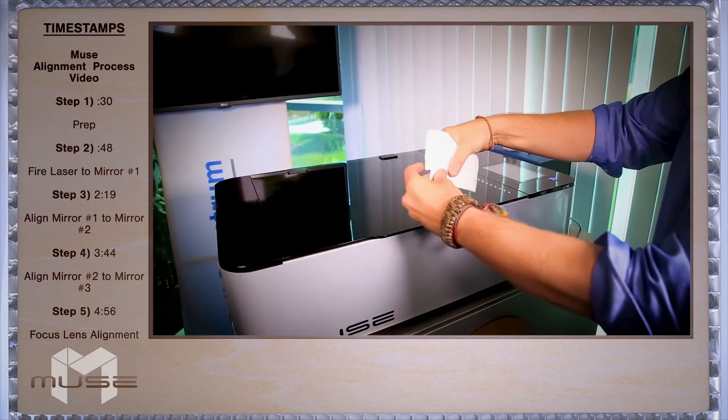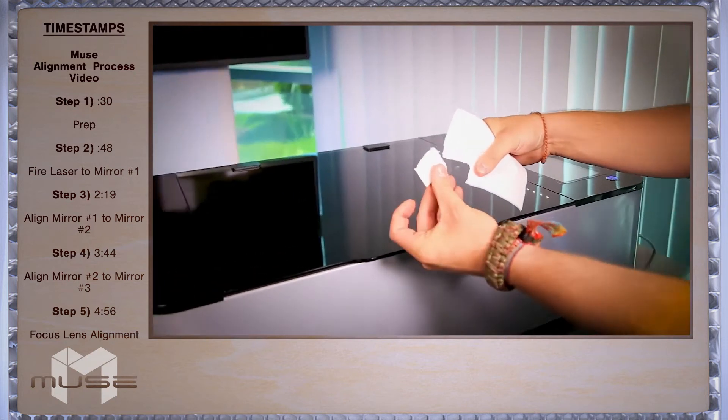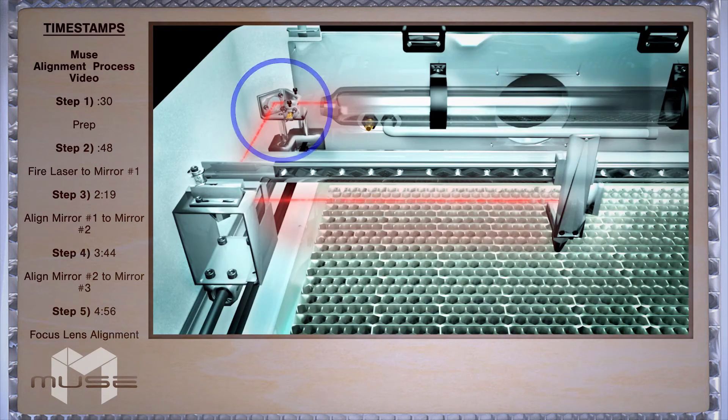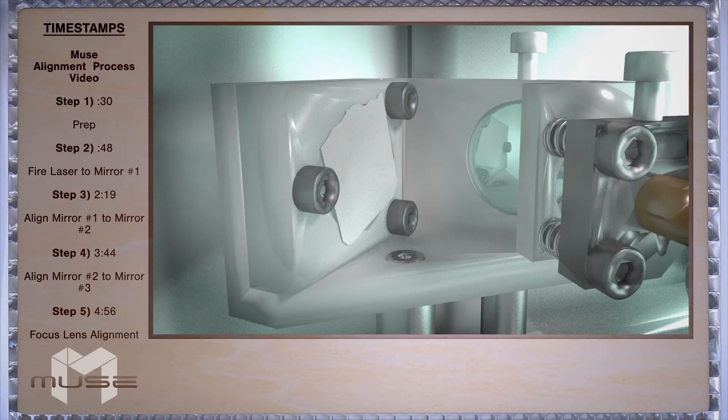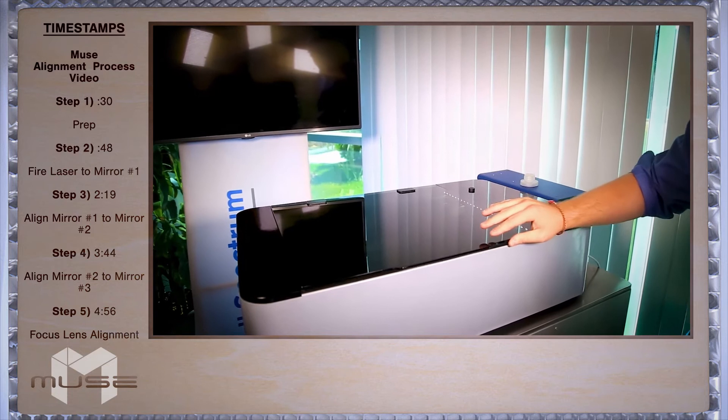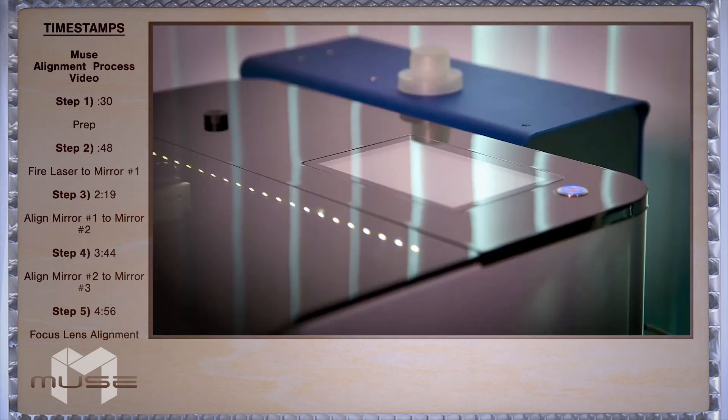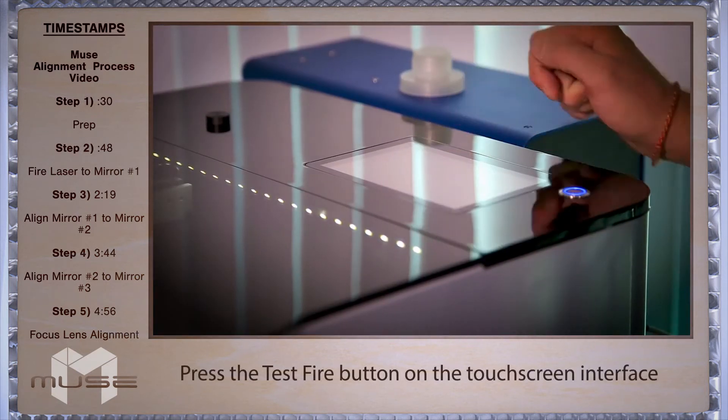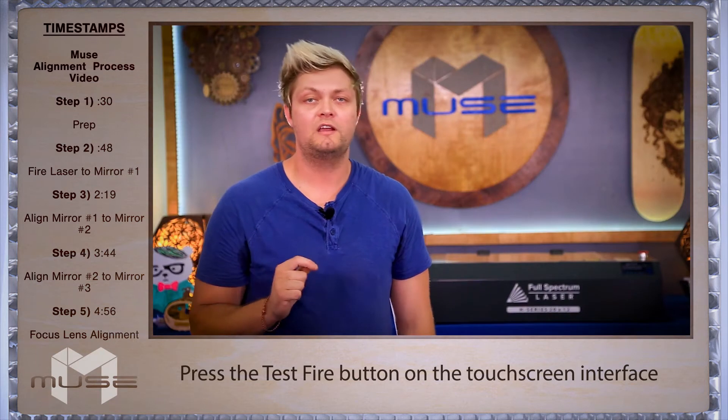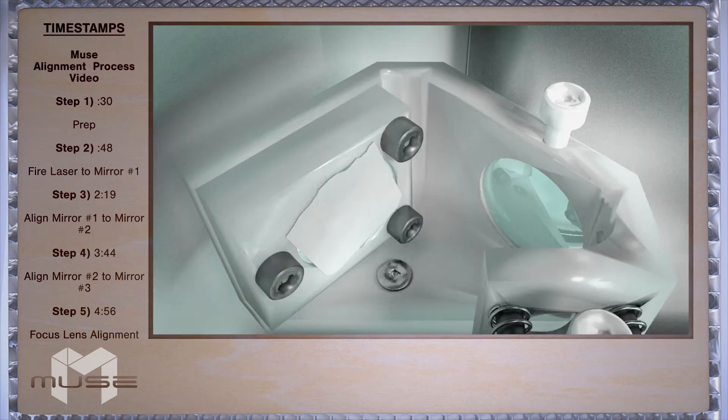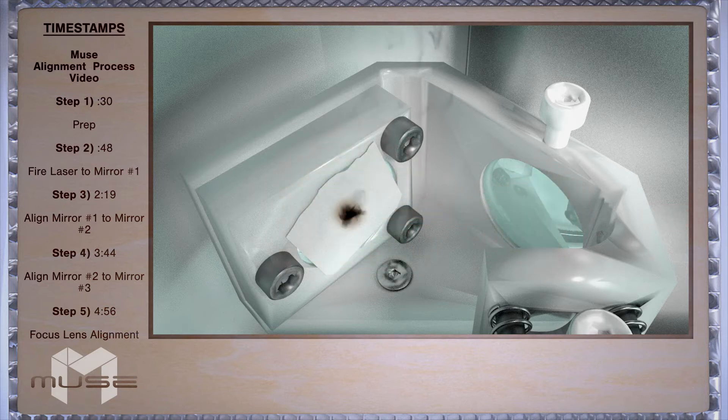Take a small piece of thermal paper about a half inch will do and place it on mirror one which is located to the left of the laser output. Close the lid. Press the test fire icon on your touchscreen. If you don't see a test fire hit the icon again. This should put a small burn mark on your thermal paper.